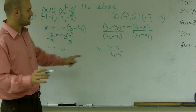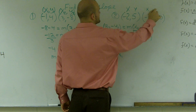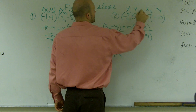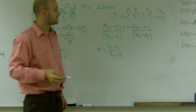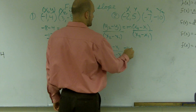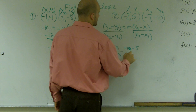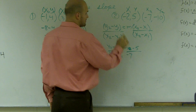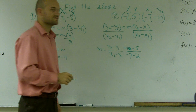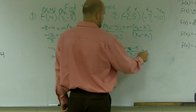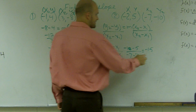However, there's nothing wrong with that. So for this problem, I just need to label my x's and y's. Then you just plug it in: y2 is negative 10 minus 5, all over negative 7 minus 2. Well, negative 10 minus 5 is going to become negative 15, and negative 7 minus 2 is negative 9.